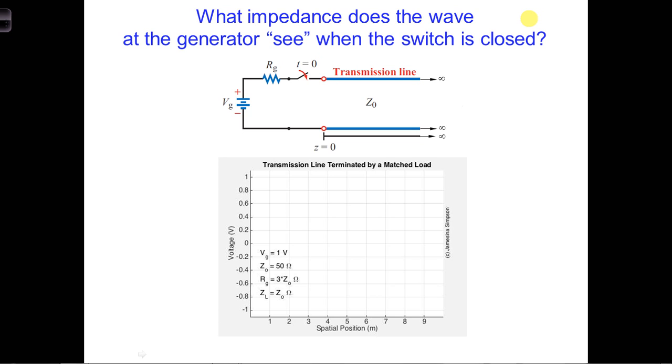First, let's consider a more realistic battery that has an internal resistance, Rg. Assume again that Vg is equal to 1.